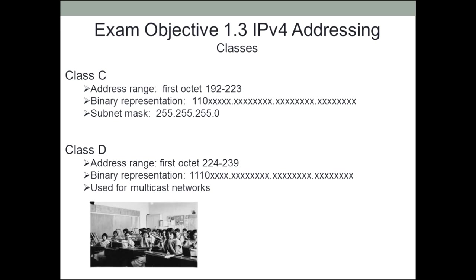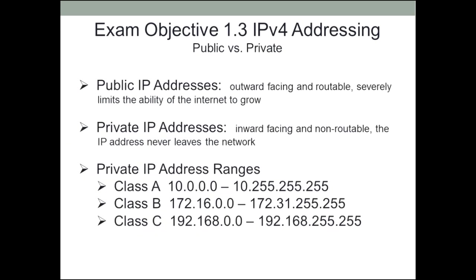Class D addresses: their first octet can be anywhere from 224 to 239. In their binary representation, the first three digits on the left were always 1, 1, 1, followed by a 0. Class D addresses are only used, or usually only used, for multicast networks, and we will be talking about that in just a little bit.